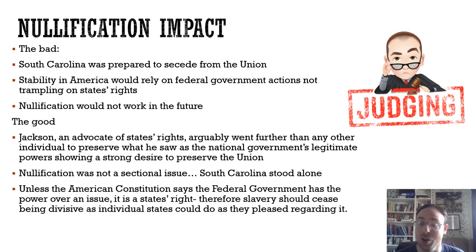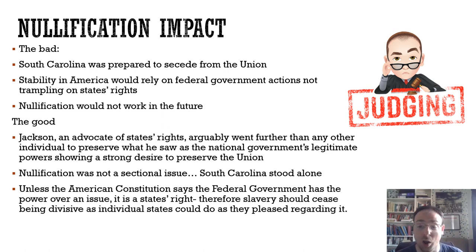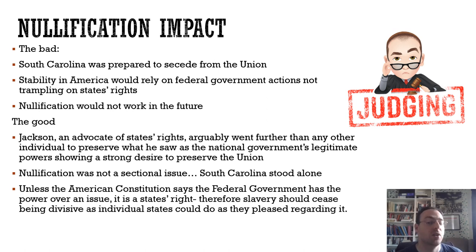We can see that nullification is not a viable option — it doesn't work. In some ways that sounds quite good, but what it means is that when a massive crisis comes in 1860-1861, since nullification doesn't work, what you'll see instead is proper secession. There are some positives: Jackson, who had always been an advocate of states' rights, went quite a long way to protect the Union, perhaps showing the strength of pro-Union feeling. Nullification is also not entirely a sectional issue — it's South Carolina versus the rest, rather than the North versus the South, so South Carolina can be seen as a sole agent rather than representing the whole South.